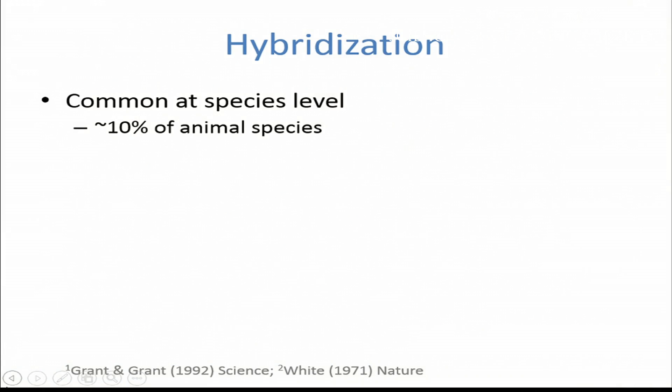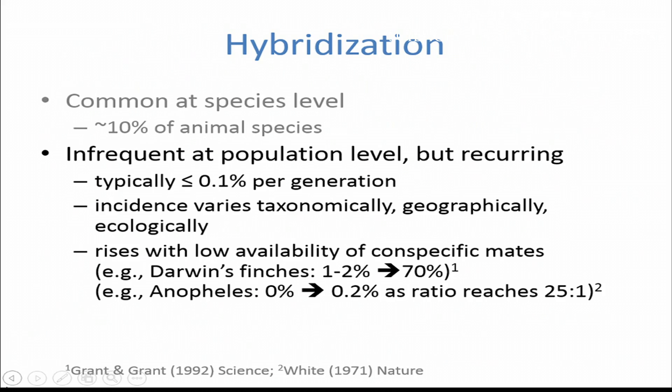Hybridization is an entirely different situation. Animals hybridize, and on average 10% of species hybridize with at least one other, but it's taxonomically variable. For example, about 75% of British duck species hybridize with at least one other. At the population level, hybridization is rare — roughly 0.1% per generation — but again, the incidence varies taxonomically, geographically, because the species actually have to overlap, and ecologically. This is really key because even over the course of a year, as you go from rainy to dry season, that changes the relative abundance of hybridizing species, and a skew in relative abundance is a key factor dictating the rate of hybridization.